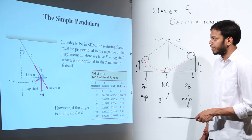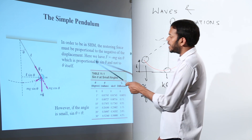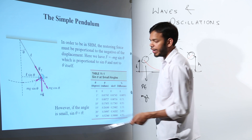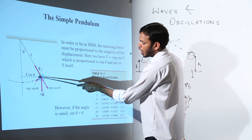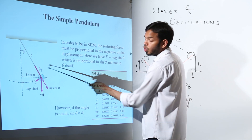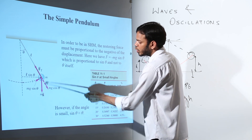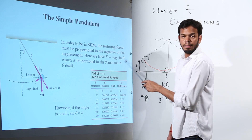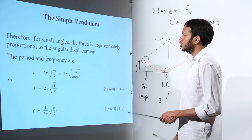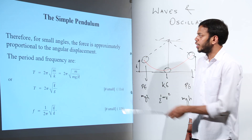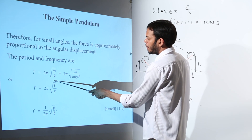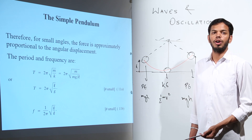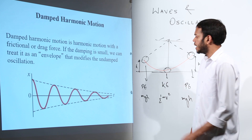The potential energy MGH at the extremes gets converted into kinetic energy ½mv² at the bottom, and back again, conserving energy. For SHM, the restoring force must be proportional to the negative of displacement. The forces on the bob are its weight and the string tension. Resolving weight gives components mg cos θ and mg sin θ. The component mg sin θ is directed inward, opposite to displacement, so F = −mg sin θ. For small angles, this gives the time period T = 2π√(L/g).